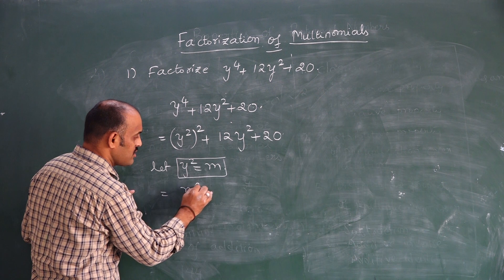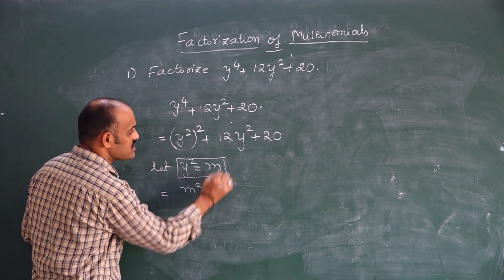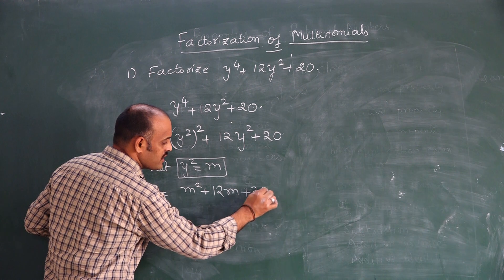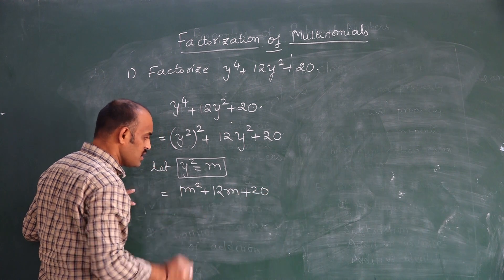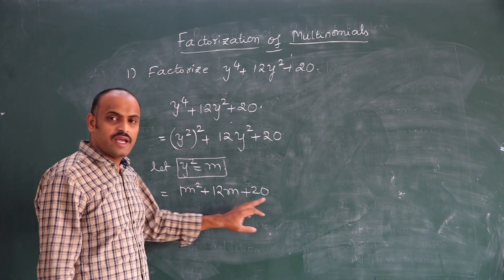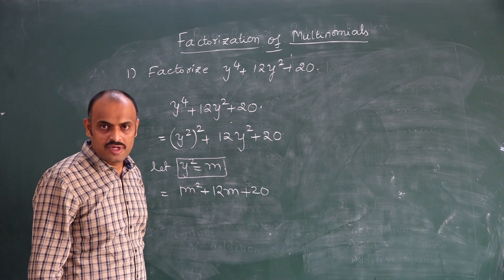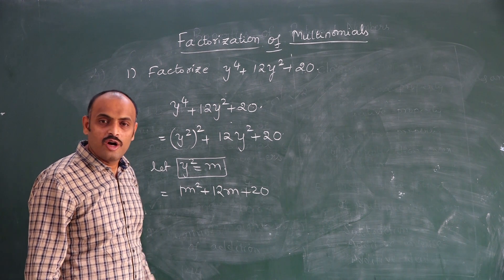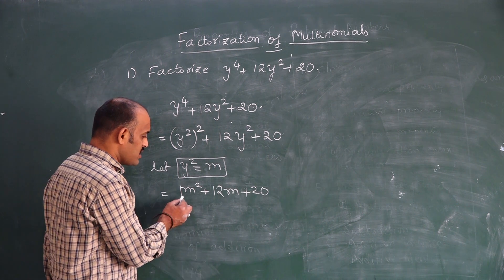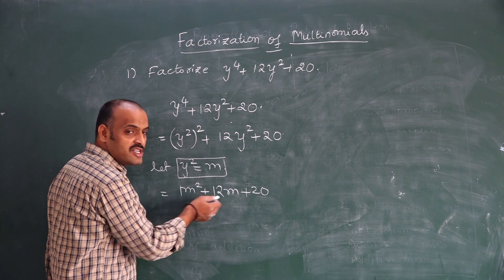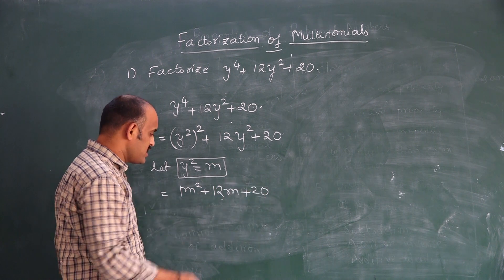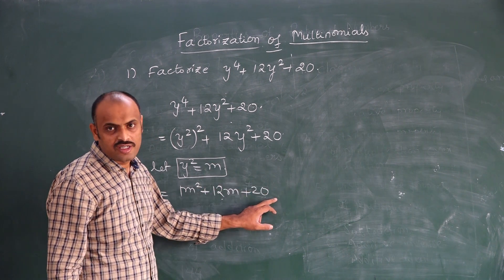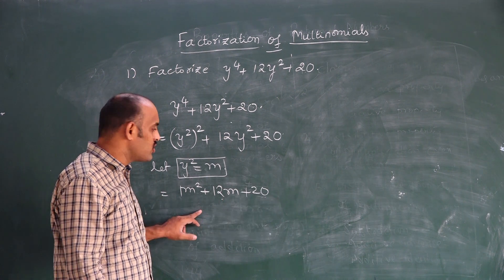So we get m² + 12m + 20. Now it is in quadratic expression form. We know how to factorize a quadratic expression. First let us check whether the terms are in descending order: m², m¹, constant. Yes, they are in descending order.